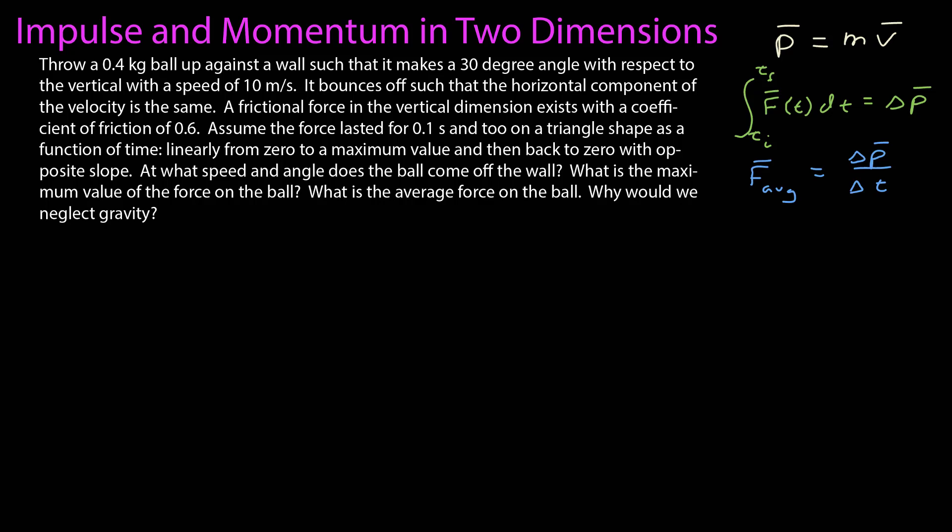In this video, we're going to look at impulse and momentum in two dimensions. The physics hasn't changed going from one to two dimensions. We still have our definition of momentum, how the impulse leads to a change in momentum, and how we can calculate that in terms of our average force. We just have to keep track of the two dimensions, possibly using component notation. We also use the idea that the physics in one Cartesian dimension doesn't affect the physics in the other.